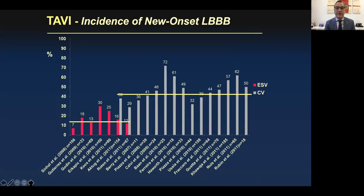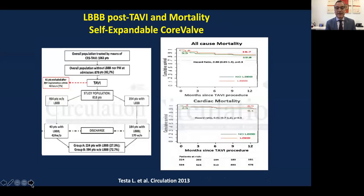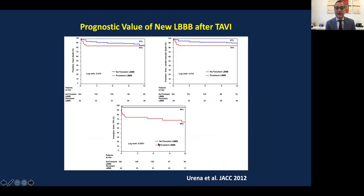The incidence of left bundle branch block also differs according to valve type — lower with balloon-expandable but higher with self-expandable valves. It was related with late mortality as shown in a Circulation paper from 2012. However, other publications have not demonstrated a correlation between left bundle branch block and all-cause or cardiac mortality, though they do show a relationship with the need for pacemaker implantation when left bundle branch block occurs after TAVR.